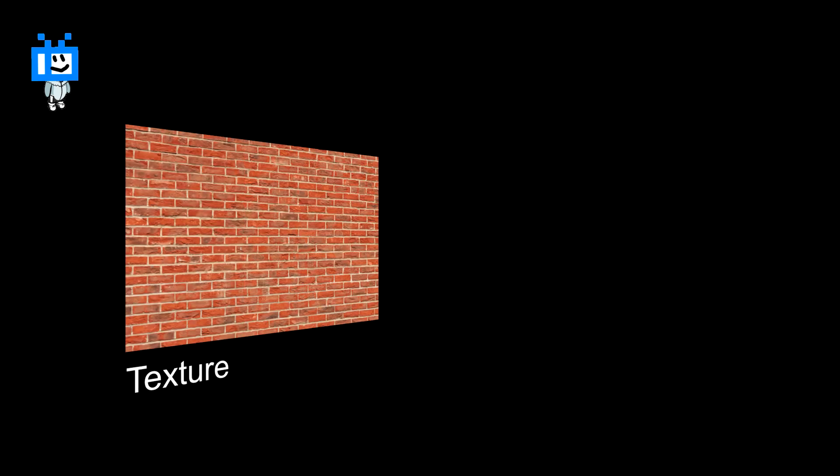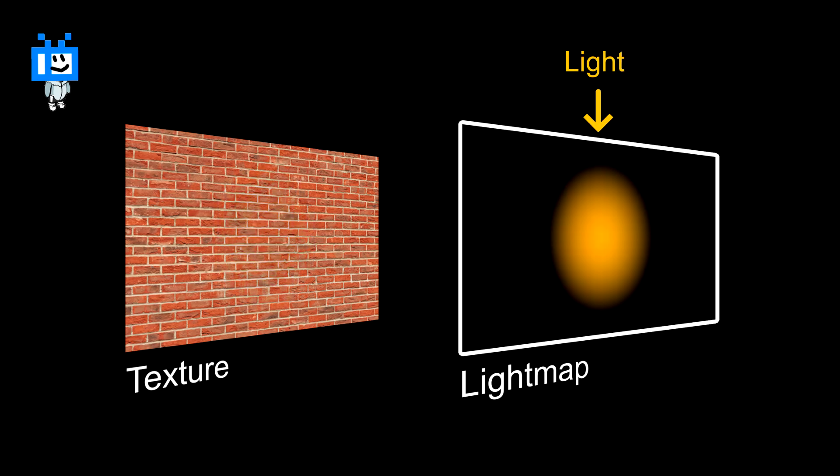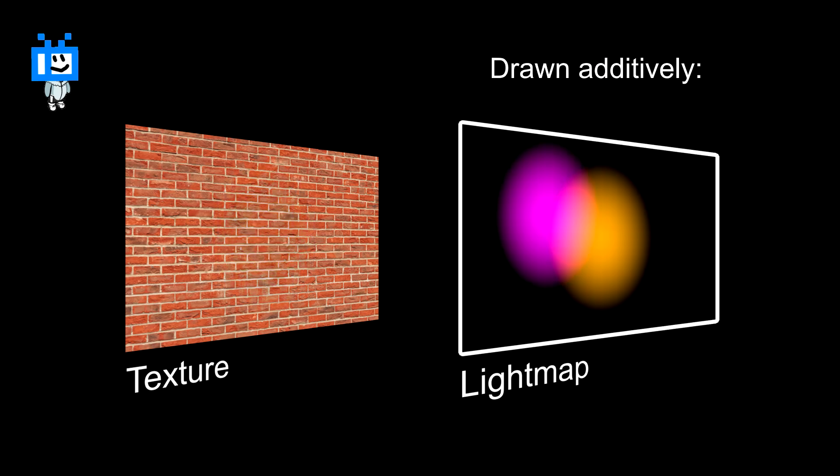And generating these light maps are actually really simple. Well, at least in concept. Let's look at one of the most exciting examples for this topic: a brick wall. First, we have the wall itself with the texture and no lights. Then, we create this new texture that is pure black. Instead of drawing the lights on the wall, we draw them on this new black texture. This is where you need to use additive blend mode, as that's how light mixes.